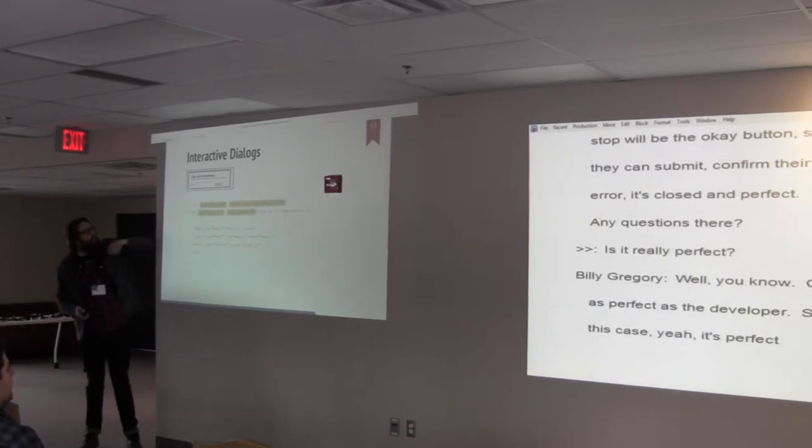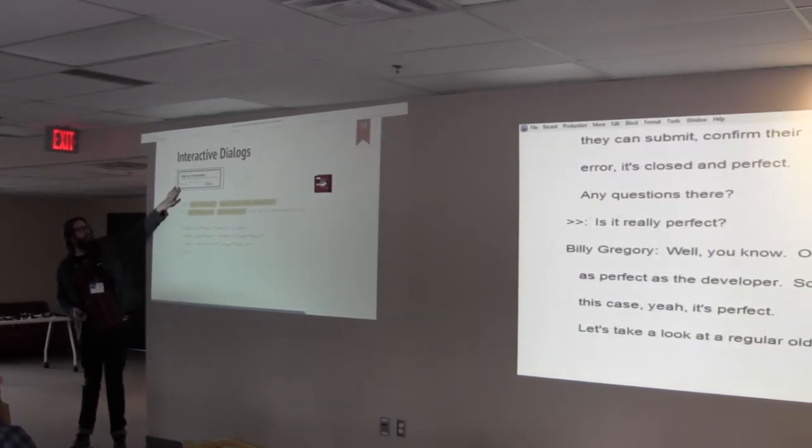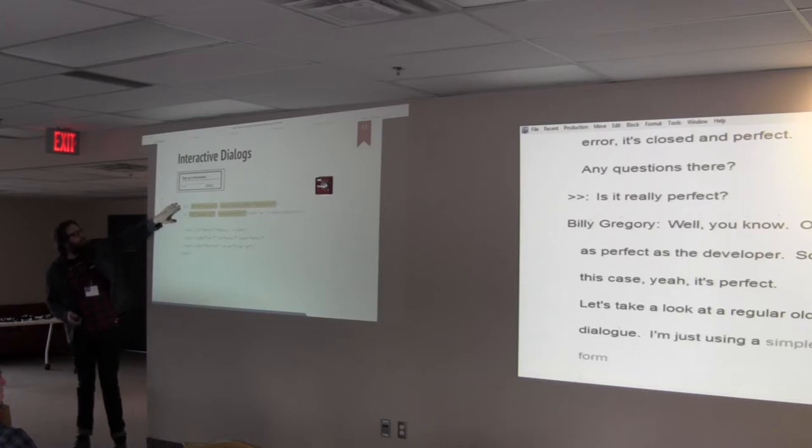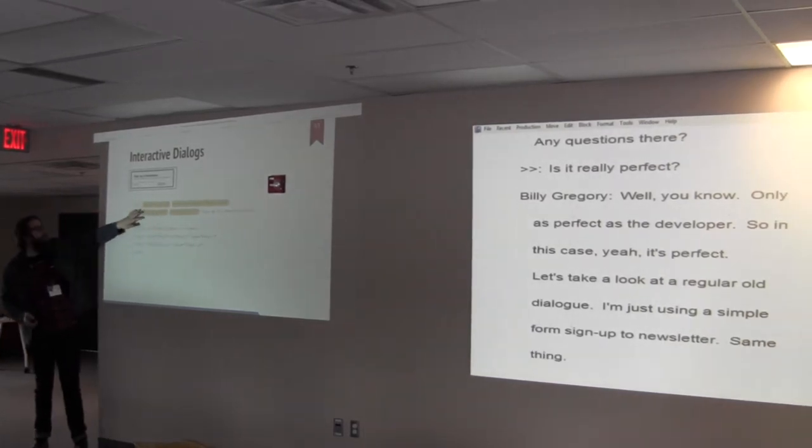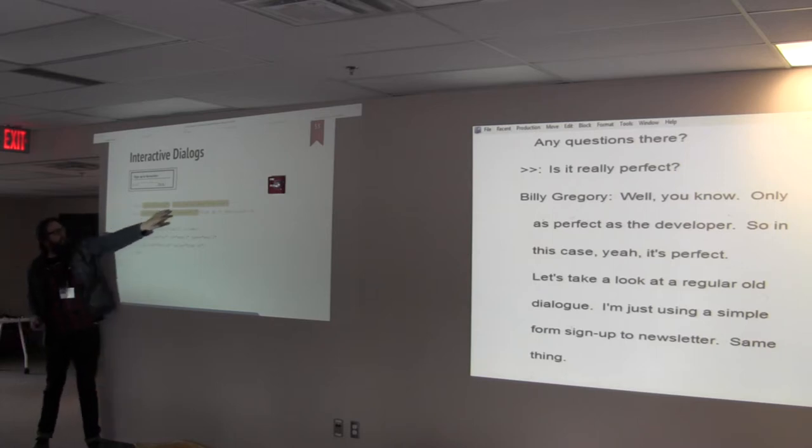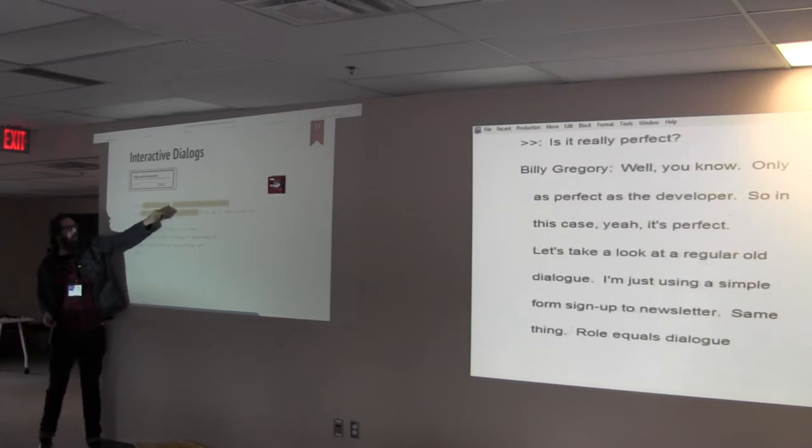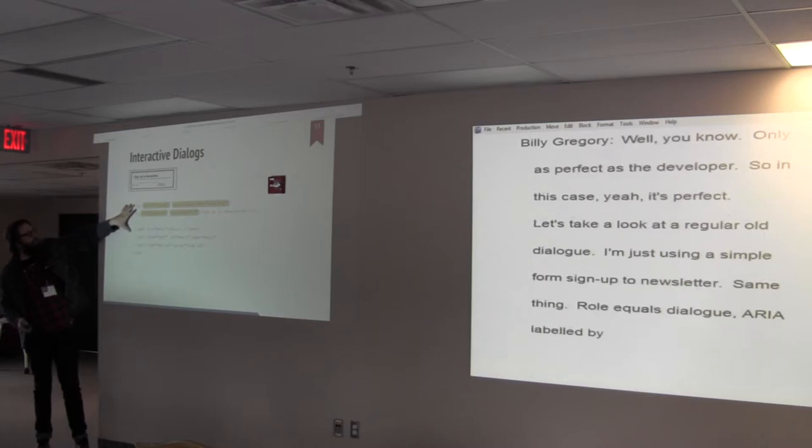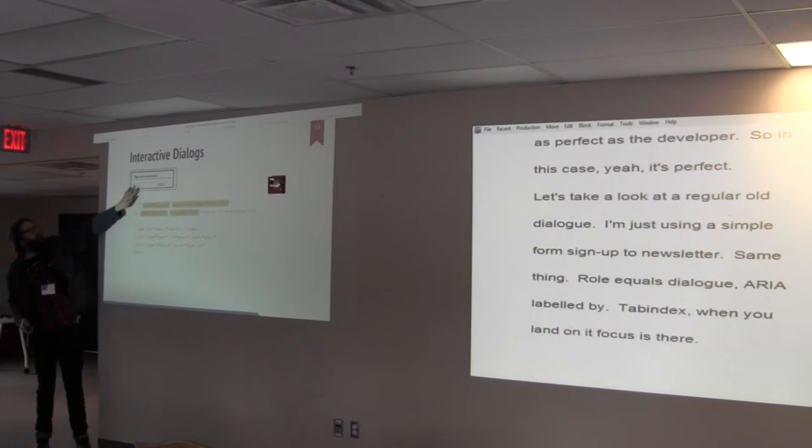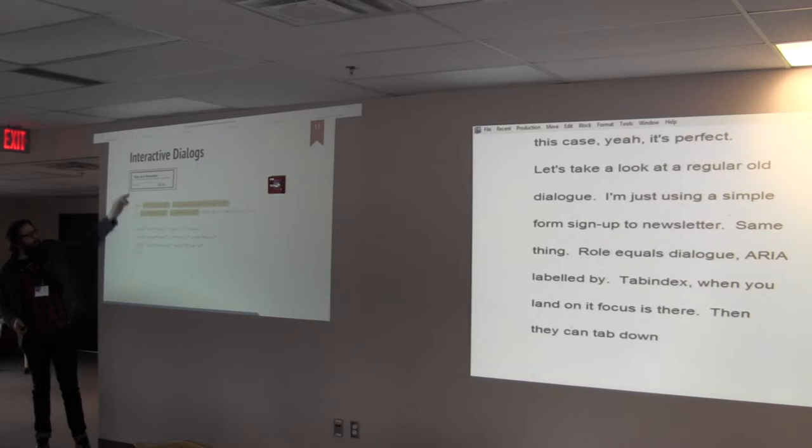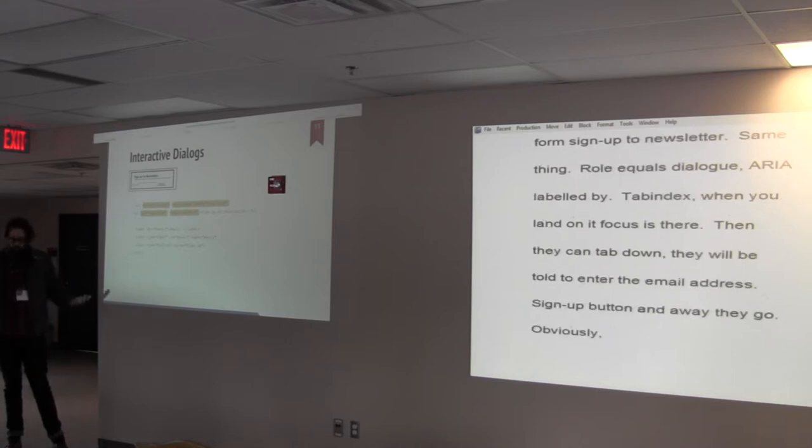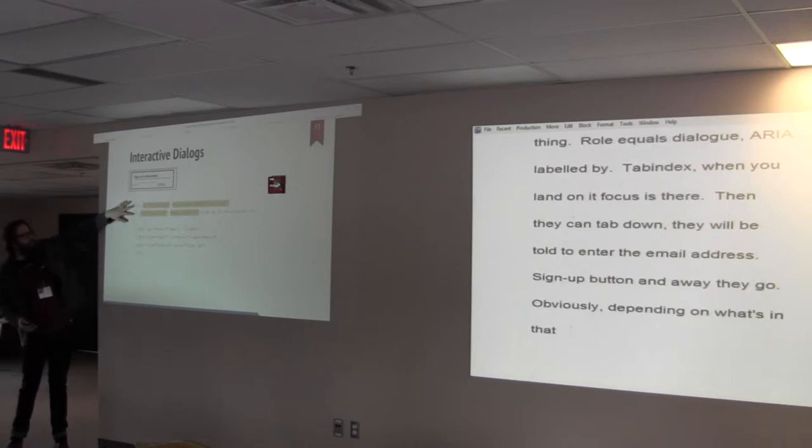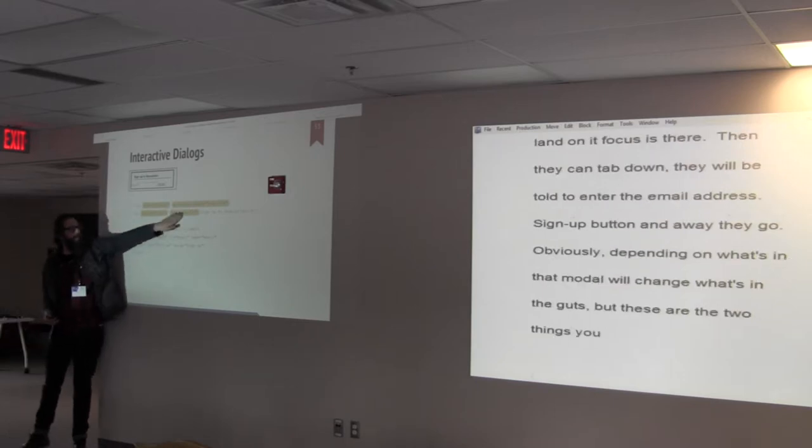So let's take a look at a regular old dialogue. I'm just using a really simple form. Sign up to the newsletter. So it's sort of the same thing. The tab index should be on the wrong element there. Pretend I put it up there. I was doing this hastily this morning. So we have role equals dialogue. ARIA labeled by it. Again, the title should be up here on the div. So when you land on it, focus is sent there. Again, all of that is announced. Then, they can tab down and enter their email. Then you hit the sign up button. Obviously, depending on what's in that modal, we'll change what's in the guts. But these are the two things you want to take note of.